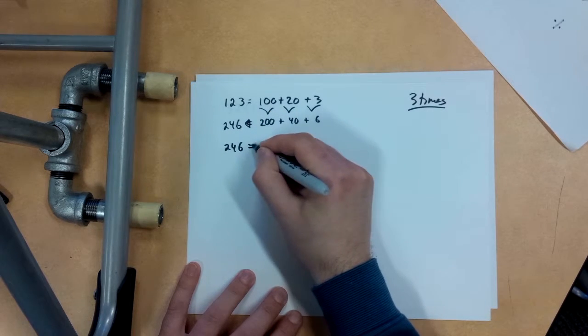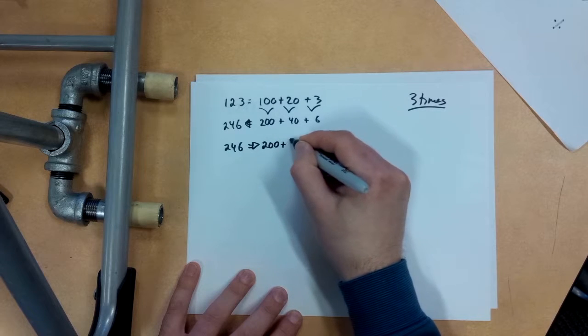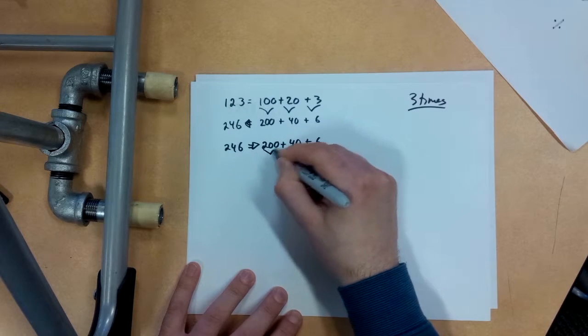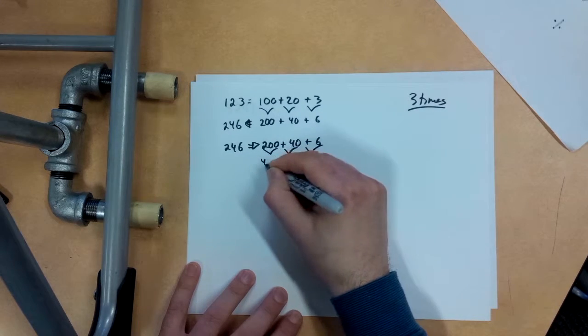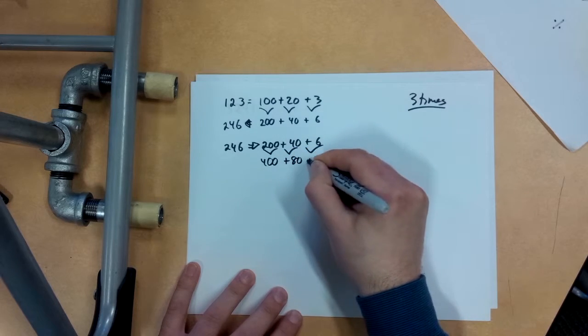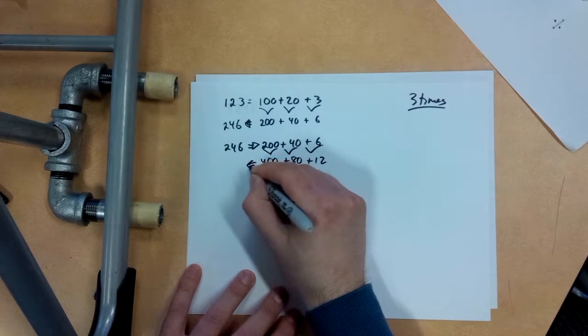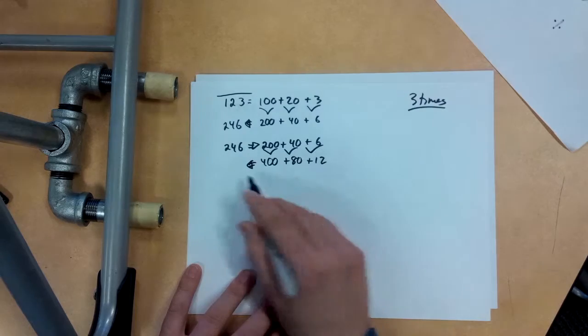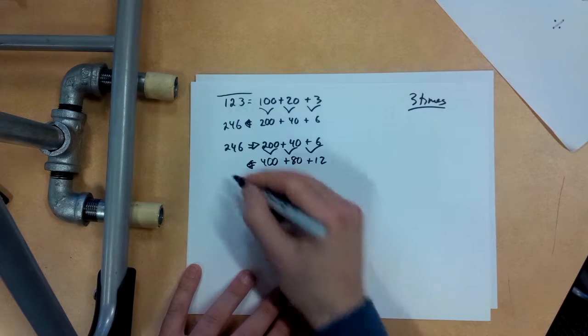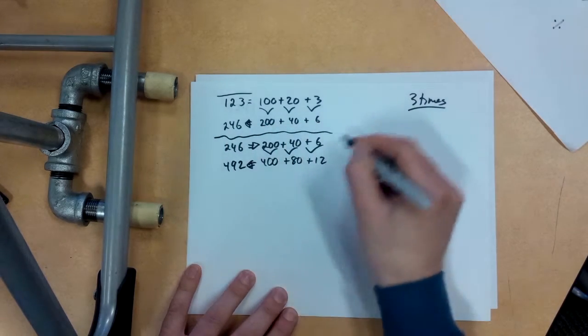Now I'm going to double it again, 246, that's like 200 plus 40 plus 6. I'm going to double that, and that's going to be 400 plus 80 plus 12. So going back to my statement list here, 492.